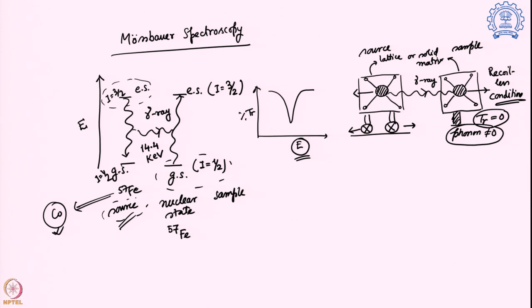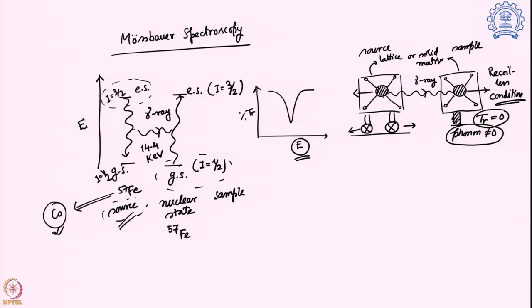When moving the source towards or away from the sample, the nucleus looks very similar but is surrounded by electrons — valence electrons in different compounds with different environments. That is why the energies of the ground and excited states will be slightly different, and we match that difference during the resonating condition by moving the source back and forth using the Doppler effect. That is why the energy scale is given by Doppler velocity — the velocity at which resonance is achieved — and the transmittance varies from 100 to 0.